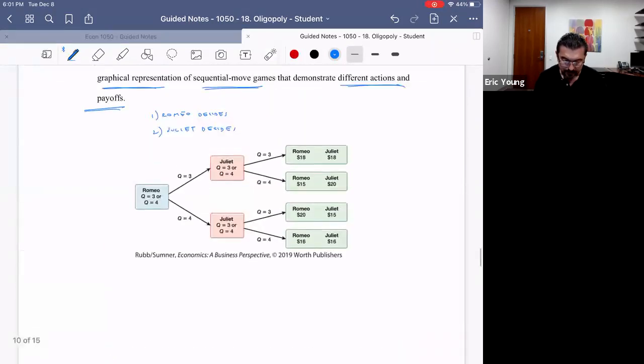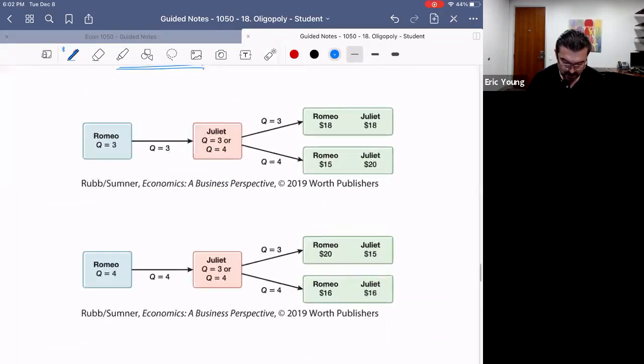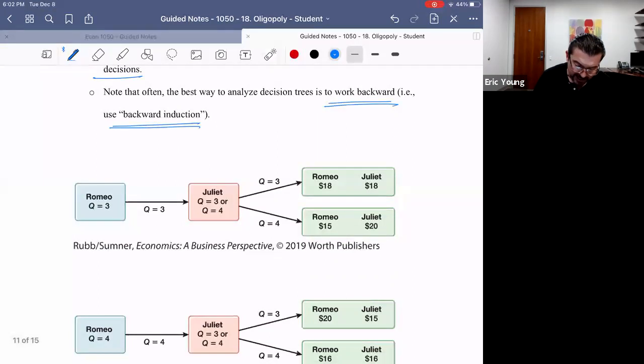So how do we think? We think backwards. Now what does that mean? Well, it means this: Romeo decides first and Juliet decides second. Since Romeo decides first and Juliet decides second, we're going to go backwards. We're going to analyze Juliet's decision first and then Romeo's decision after. So Juliet's decision first: Juliet is going to say if Romeo made three, 'I can make three or I can make four,' and Juliet will decide that if she makes three, she'll earn eighteen dollars, and if she makes four, she'll earn twenty. So we would conclude that Juliet would say, 'Yep, in this case I'm going to make four.'